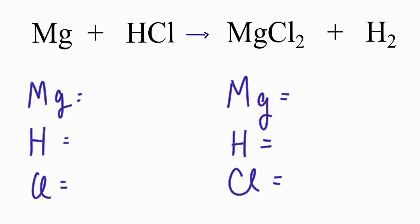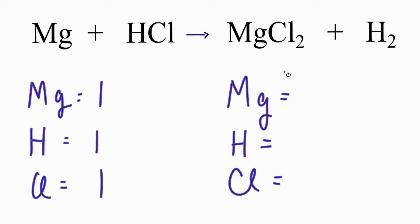To balance this equation, I've written down each type of atom on each side of the chemical equation. Now I'm going to count up the atoms, and then we'll make sure they're the same on each side to have a balanced equation. For magnesium, I have one. For hydrogens, I have one, and I have one chlorine atom. On the product side, I have one magnesium, two chlorines, and two hydrogens. So we can see the equation is not balanced.